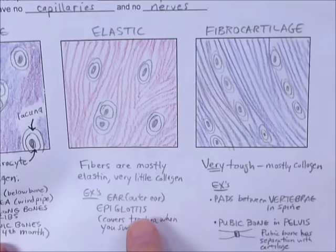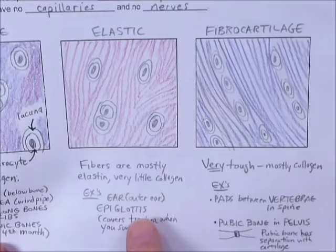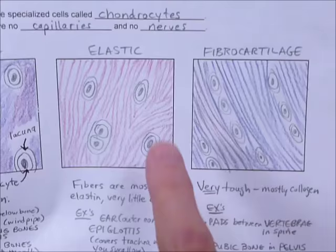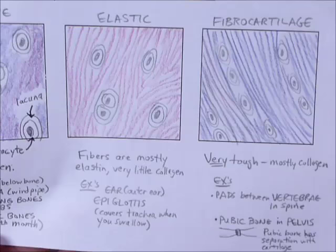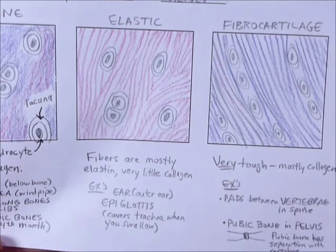The elastic and the fibrocartilage — like in the ear, the epiglottis, and in the spine — we're probably not going to find these in a chicken drumstick because we're not looking at a spine or that kind of structure like the ear and epiglottis. So let's not worry too much about those and go after the other ones.